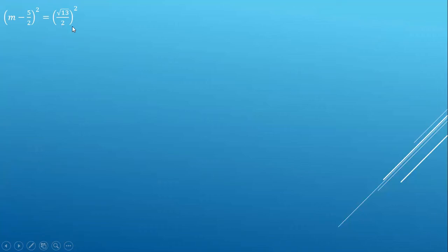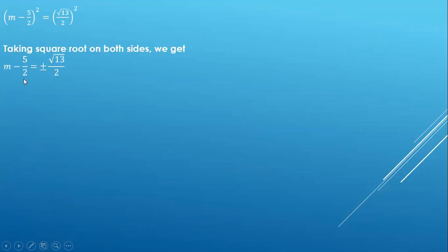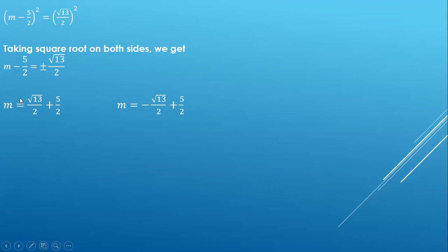Since we do not want squares in the equation, we remove them and get m minus 5 upon 2 equals plus or minus root 13 upon 2. Since it is plus and minus, we have two forms: m equals 5 upon 2 plus root 13 upon 2, and m equals 5 upon 2 minus root 13 upon 2. Simplifying, m equals root 13 plus 5 upon 2 and m equals minus root 13 plus 5 upon 2.